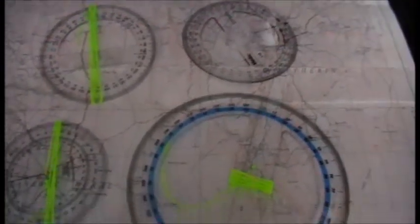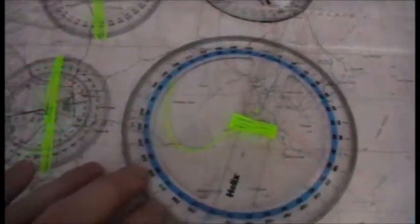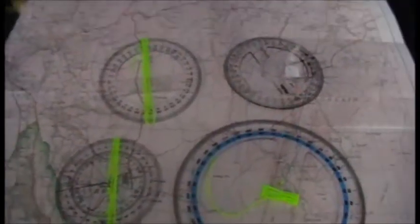They show how to use one of these protractors, how to get a grid bearing, how to set it on your compass, and then how to convert it to a magnetic bearing and match on that bearing to the attack point. That's just a look at some of my grid bearing protractors that I've made myself.